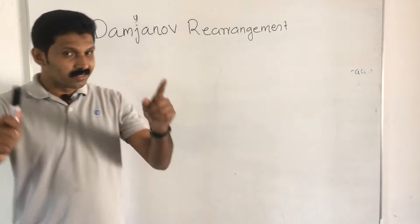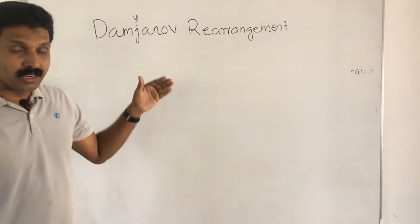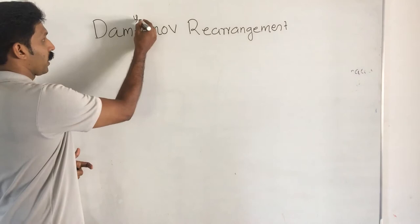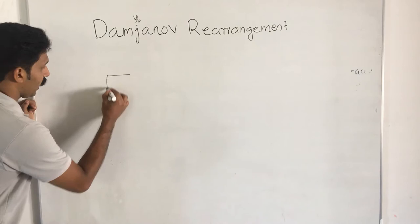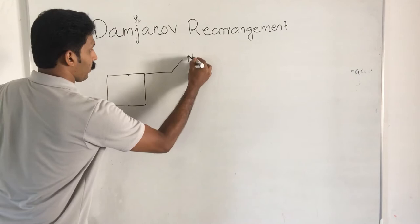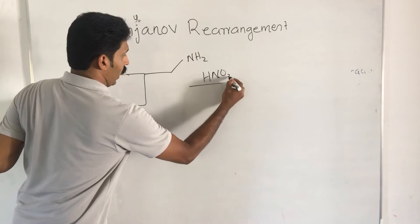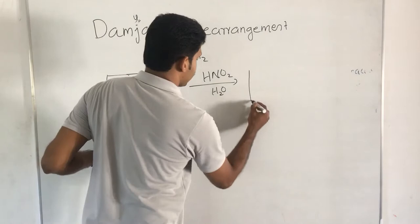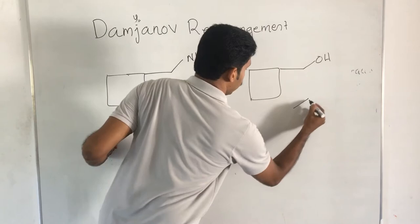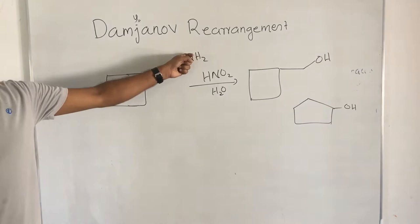This video is on the Demjanov rearrangement. When a primary amine is treated with nitrous acid (HNO2) and H2O, or dilute nitrous acid, you will get two types of answers. One answer is a simple substitution product with an OH group.